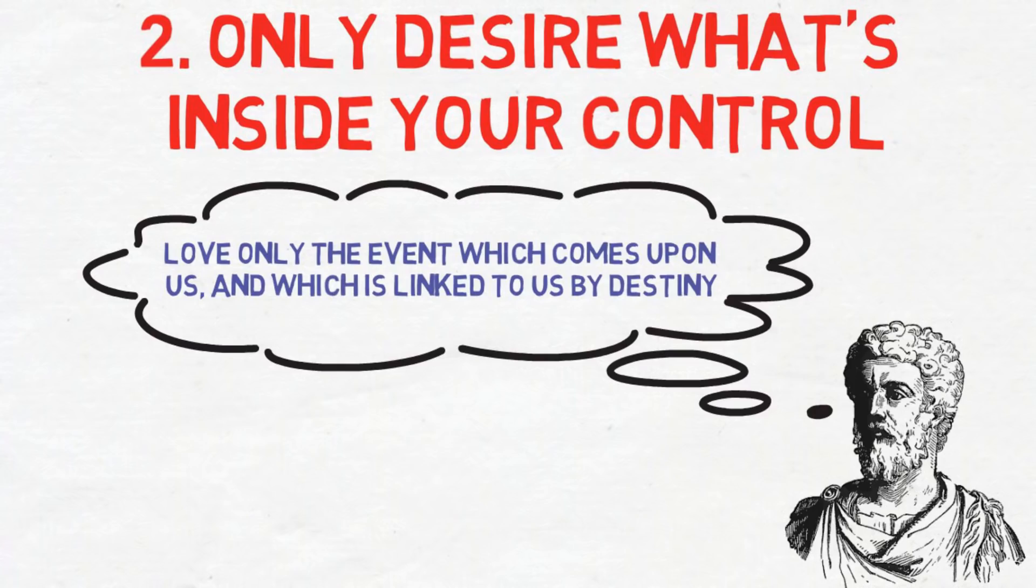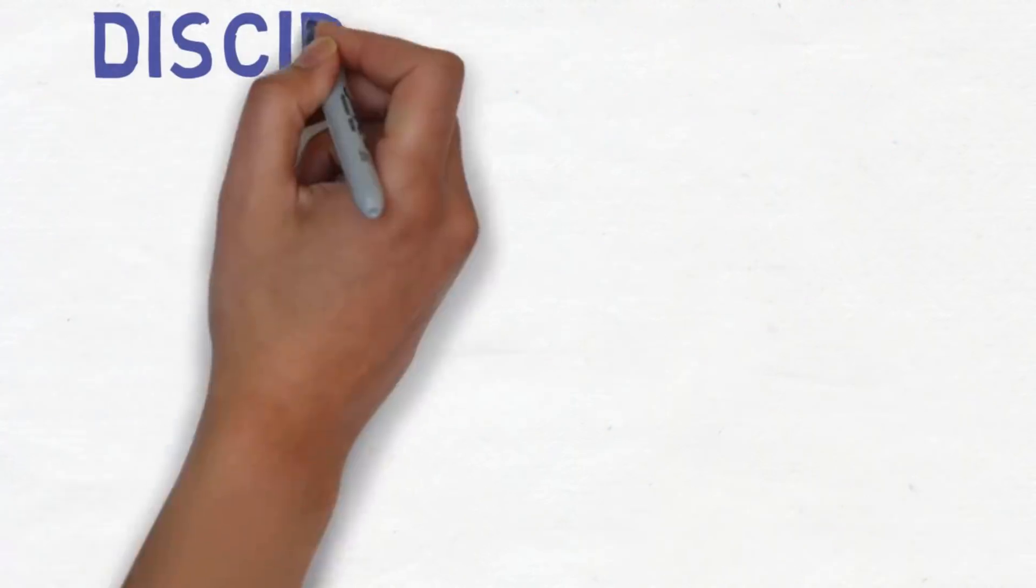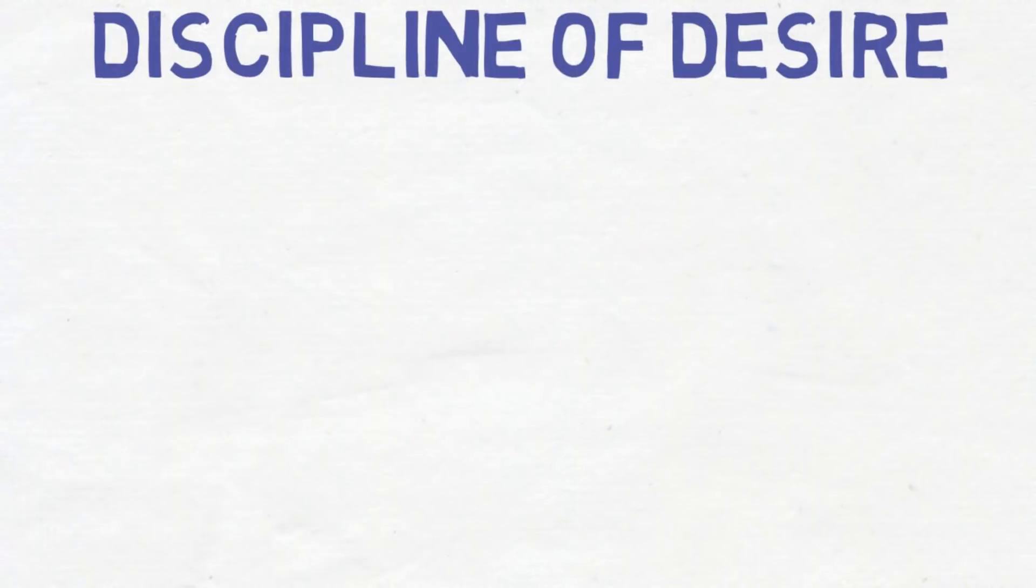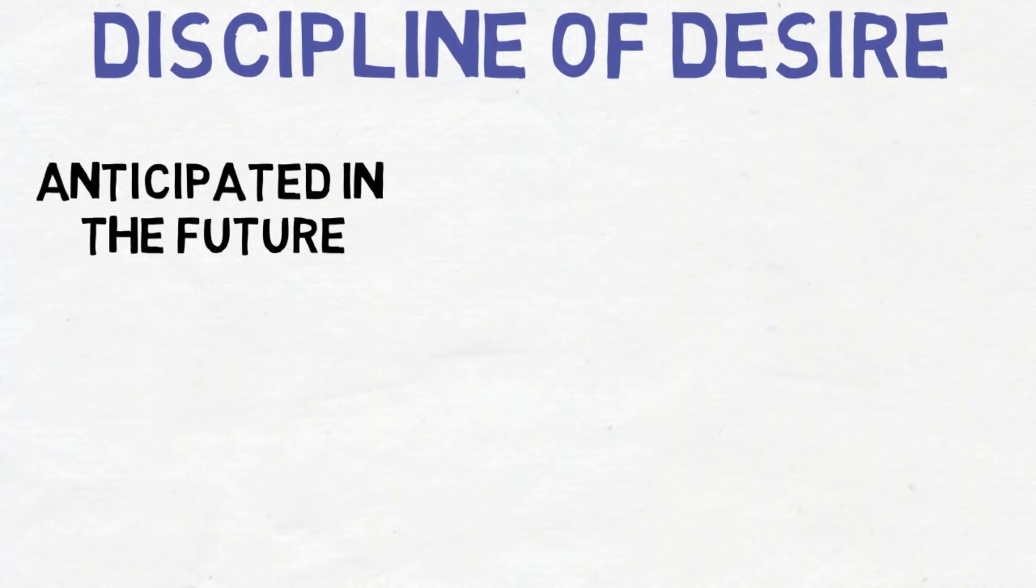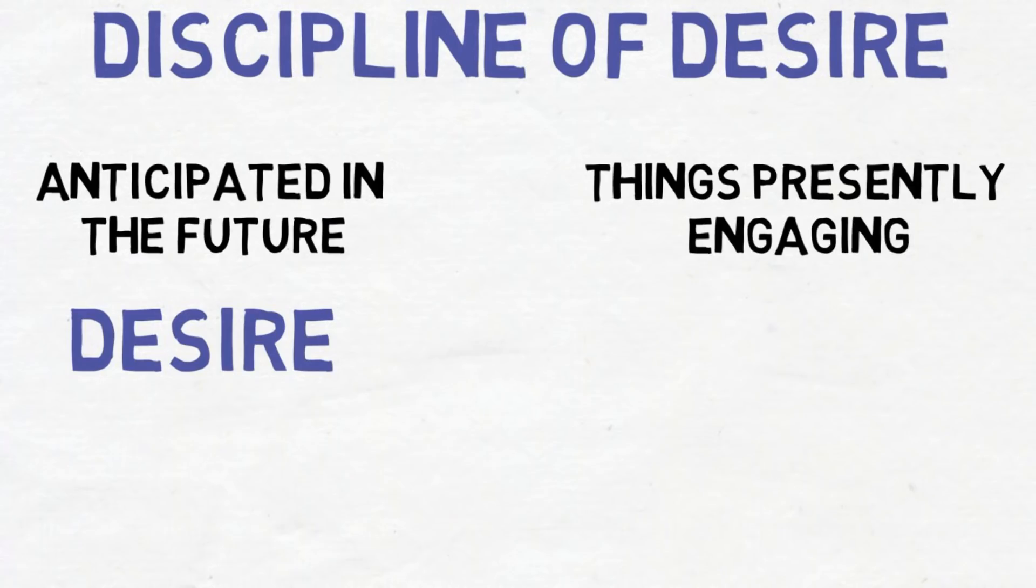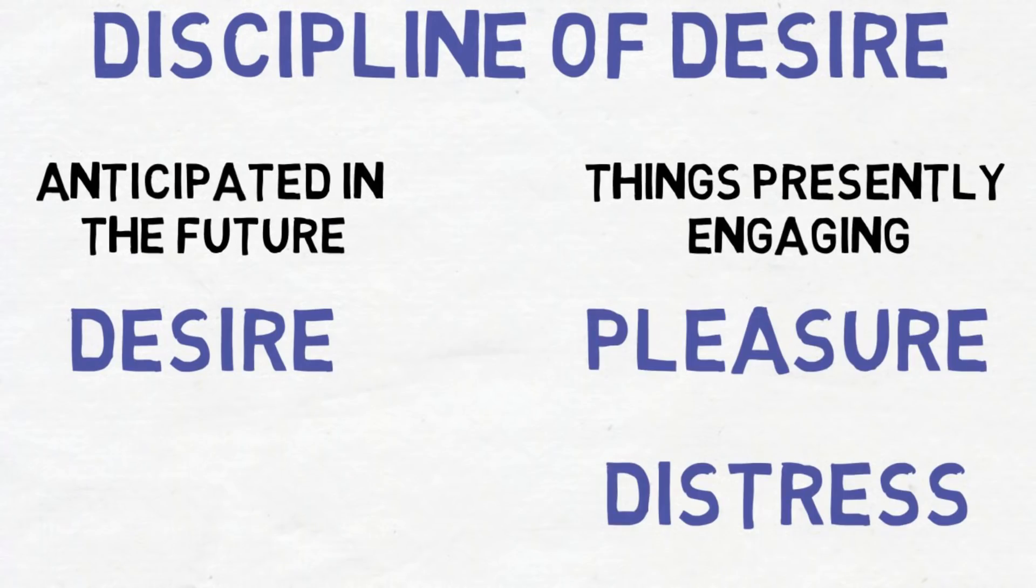This rule is influenced by Epictetus' discipline of desire. Stoics believed that there are four passions that hinder our progress and contribute to our misery. They divided the four passions into two types. One for things not in present possession or anticipated in the future, which is desire, and two for things presently engaging a person, which are pleasure and distress. Here, in this rule, we will be focusing on the passion of desire.